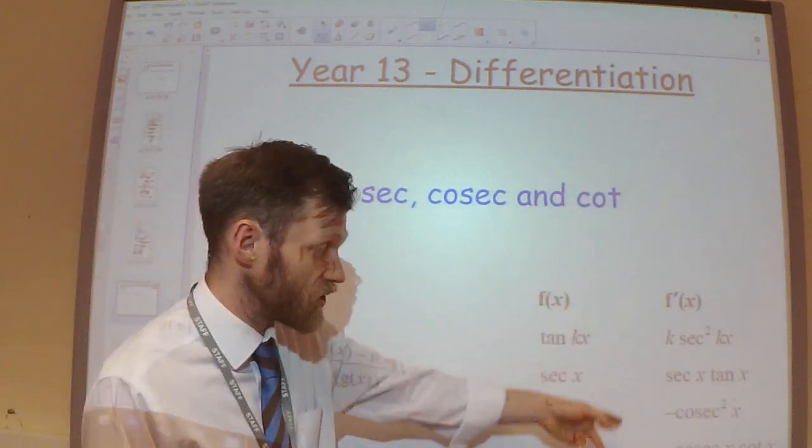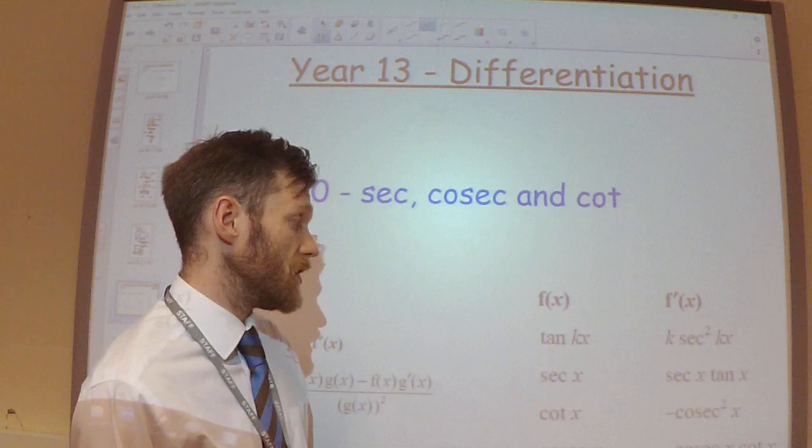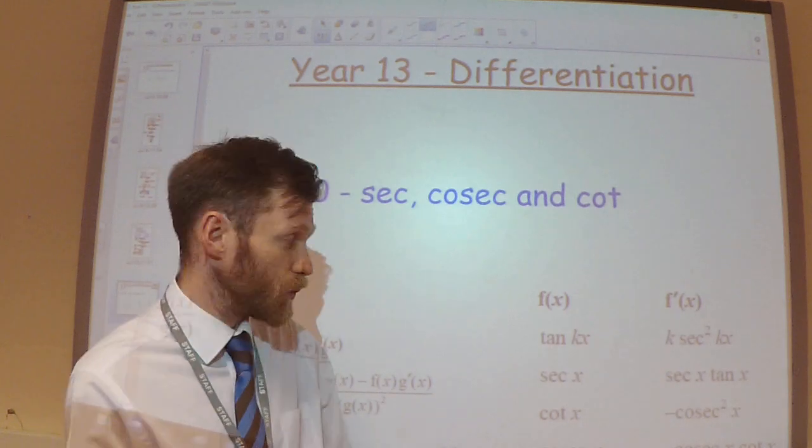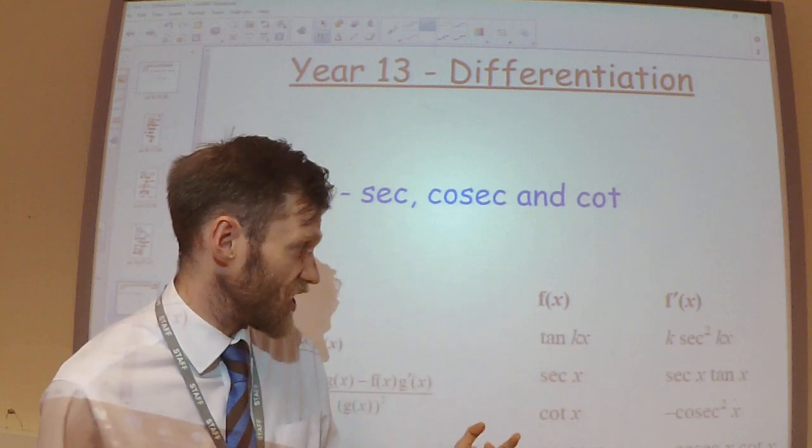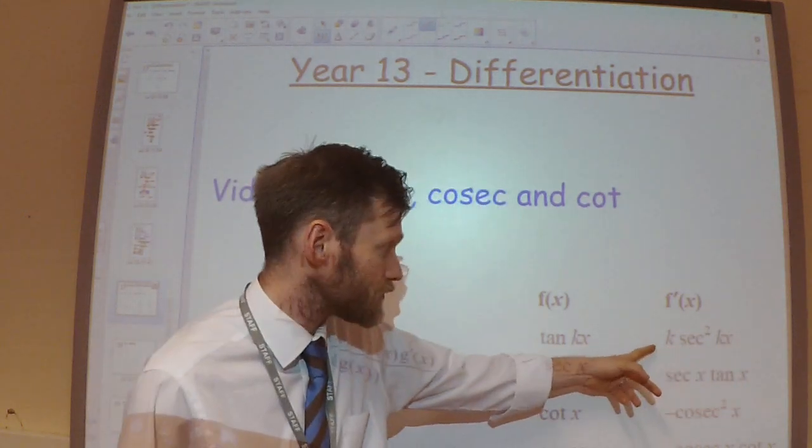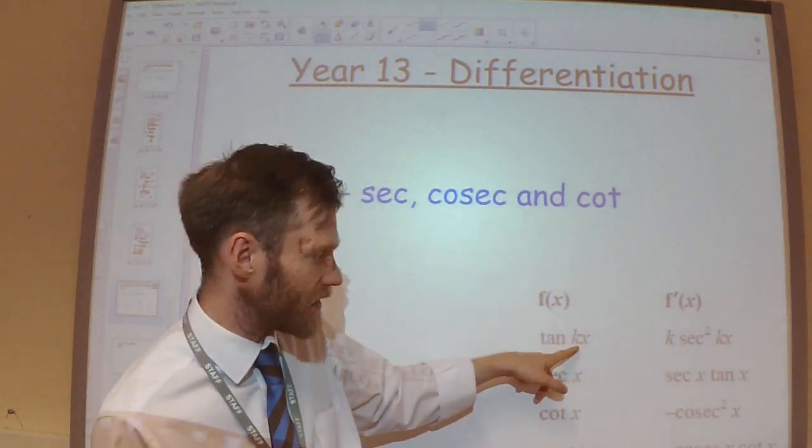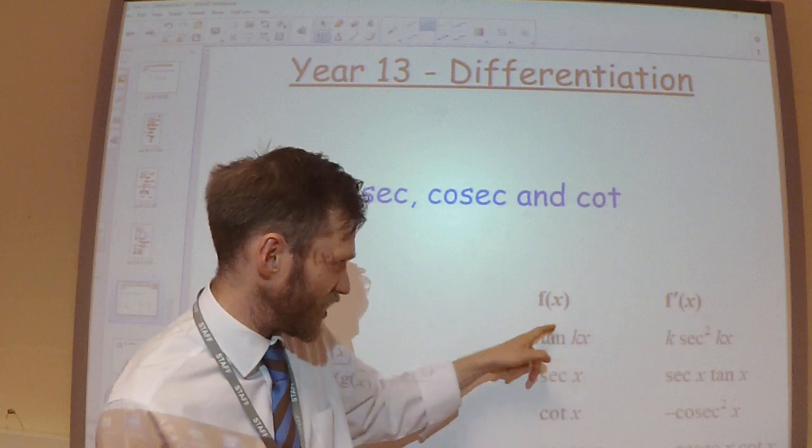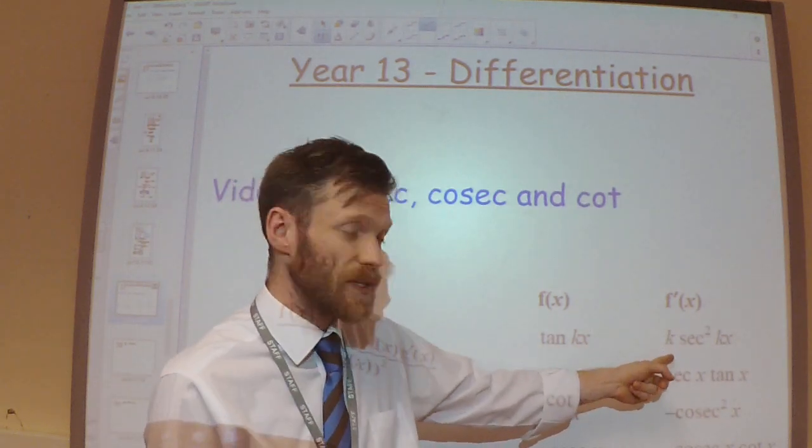Notice that I've got these results given to you on the formula sheet, but you do need to know how to prove them as well. So notice at the top here, you've got tan kx differentiates to give k sec squared kx. So you've got the chain rule involved in this as well, because you've got a kx inside there. So obviously if you were differentiating that, you'd have to multiply it by the derivative of the inside function, which is k.